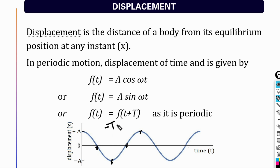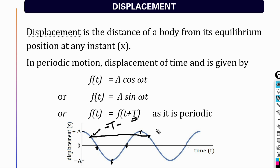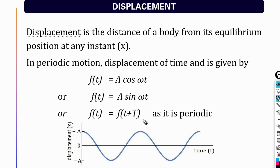The time taken to complete one oscillation is the time period. Therefore, after every T seconds equal to the time period, the particle returns to the same position. It will reach the same position repeatedly, so the motion is periodic in time. Therefore, displacement at time t is equal to displacement at time t plus capital T.